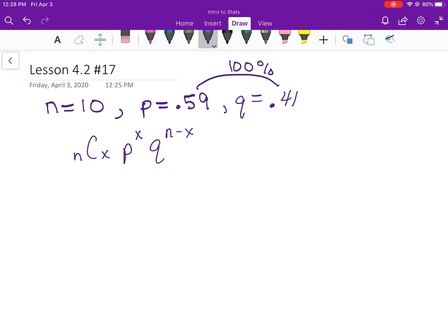So if we're going to do A, we need the probability of 8. So that's 10C8 times p to the 8th and then q to the n minus x, which is 2. Or you can look at it this way: these two numbers always add up to your n. And then you can put that in your calculator.